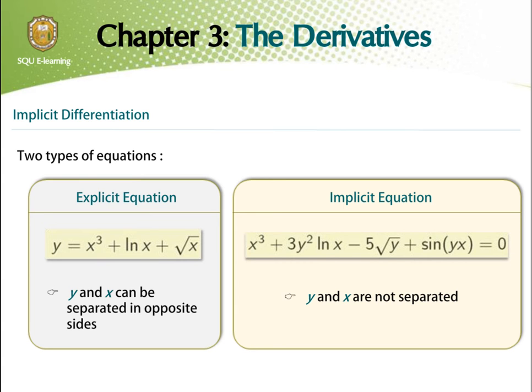If we are interested in finding the derivative here, then we are going to use the concept of implicit differentiations. Here, we are going to treat y as a function of x, and then we are going to use the chain rule to be able to differentiate this equation implicitly.